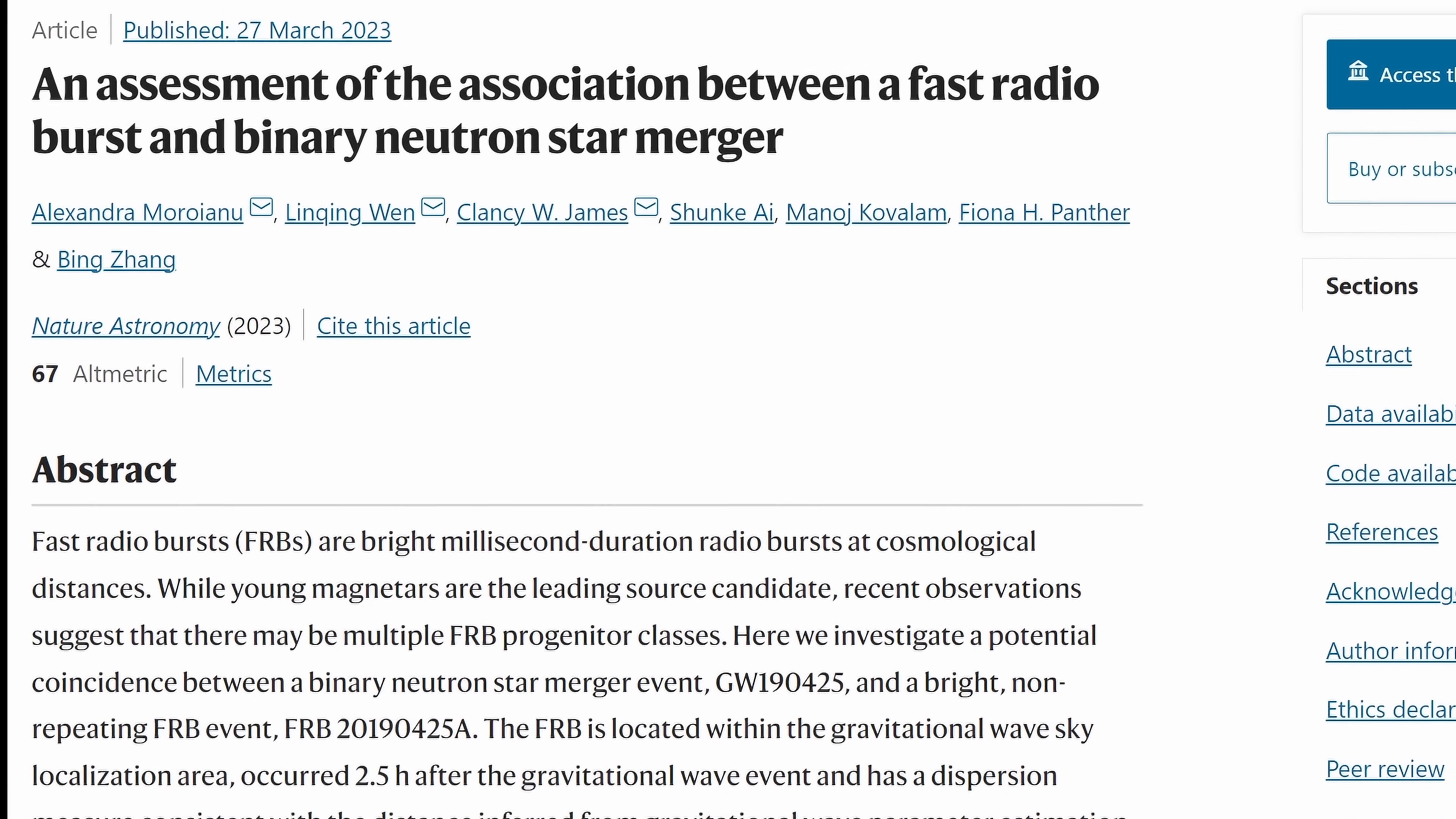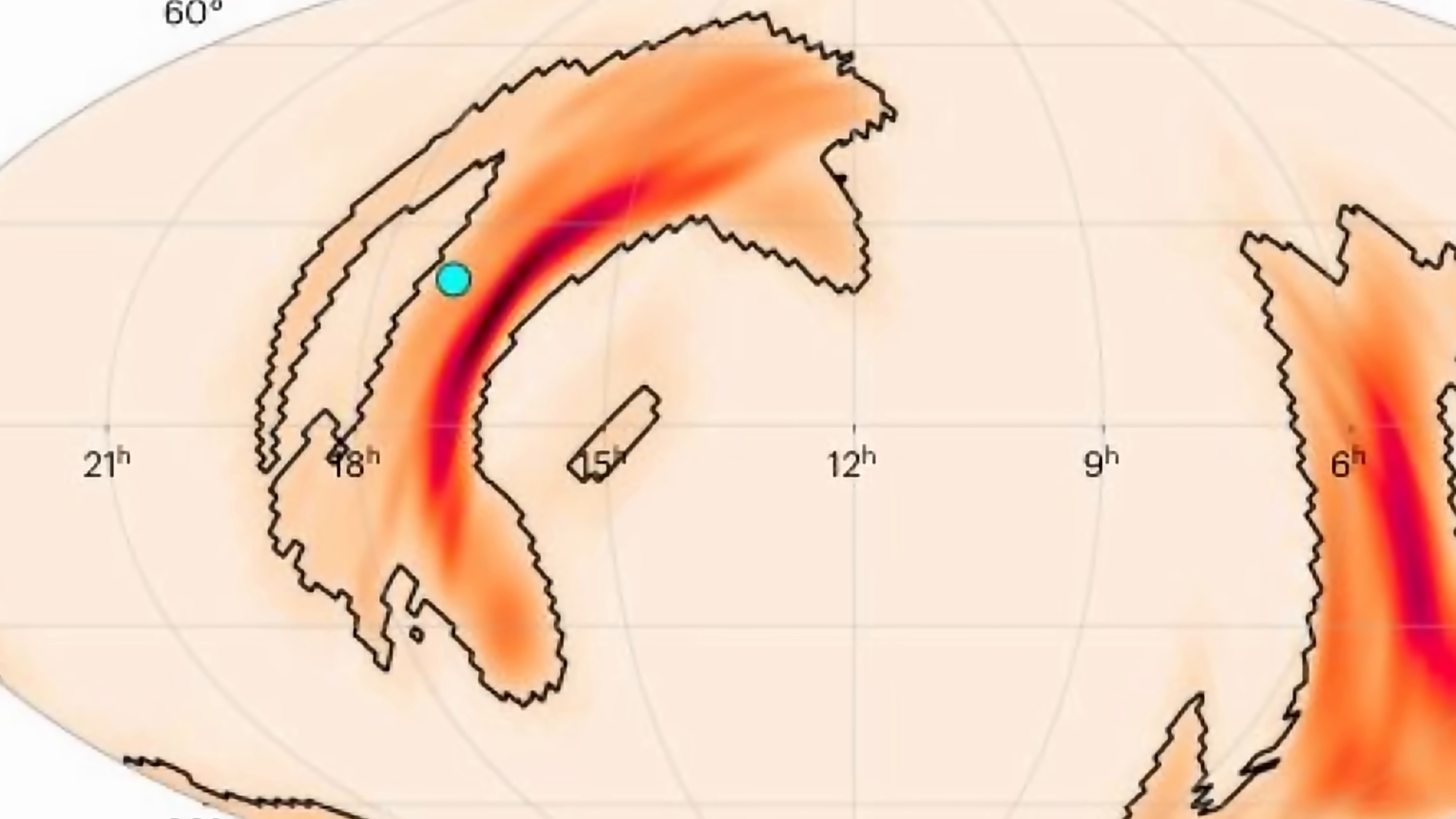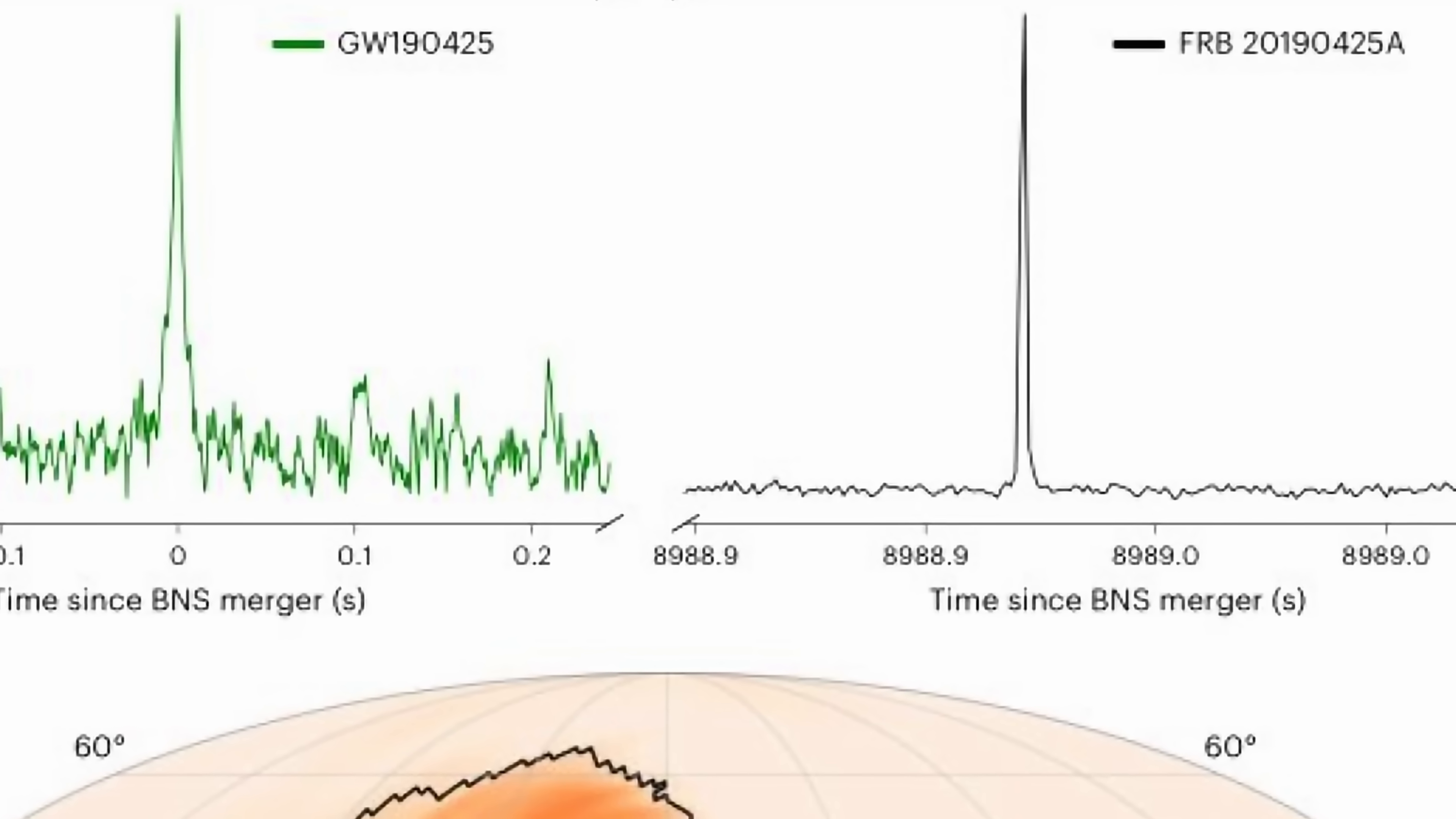This recent paper that you can find in the description below, was able to find at least one object that seems to directly suggest a very strong correlation between gravitational waves and a well-known FRB. Or basically implying that a distant neutron star collision might have been responsible for an FRB after all. And so here's exactly what they found.